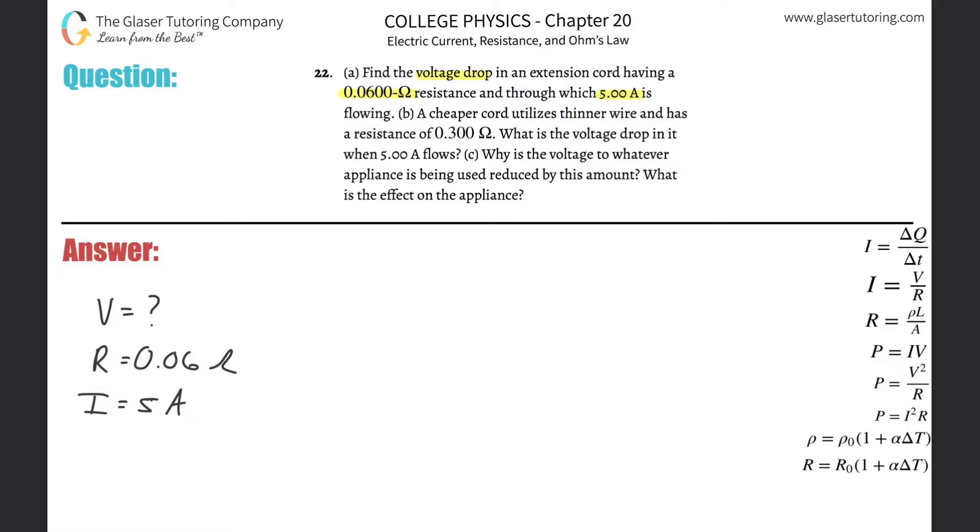We've seen plenty of problems like this. This will become ingrained within you. You've got to use Ohm's law. I is equal to V over R, meaning the current is equal to the voltage divided by the resistance. You can also memorize this one, V equals IR. They're both the same, just algebraically reworked.